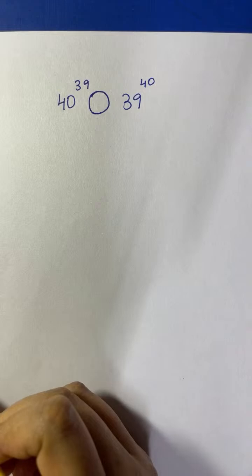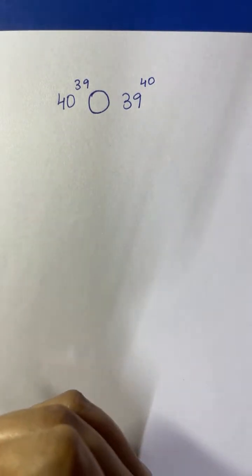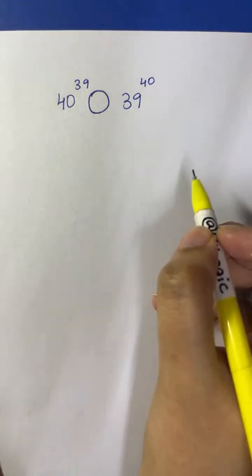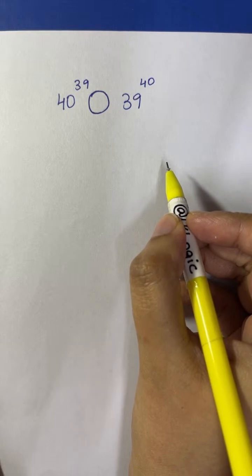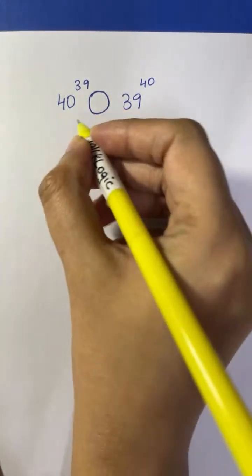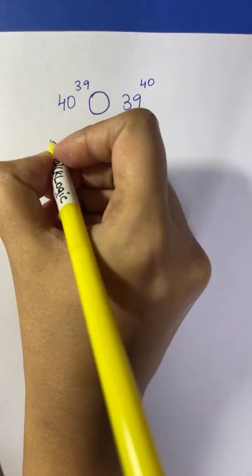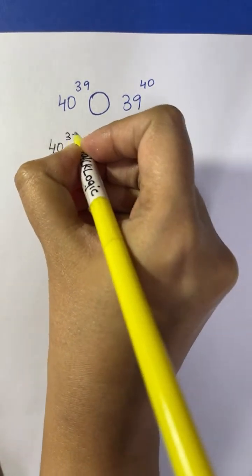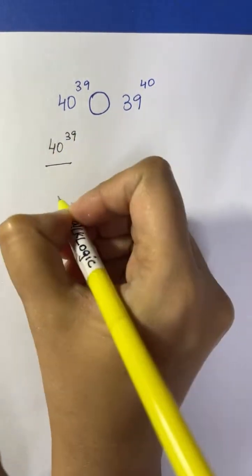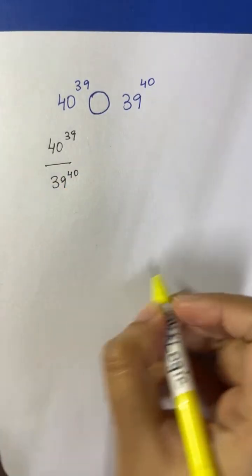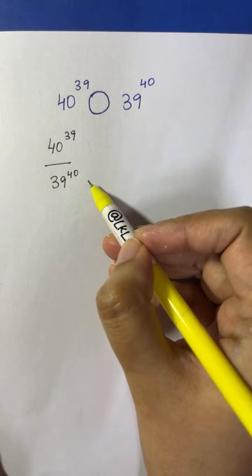So what should we do? How should we compare these two numbers? What we are going to do is write it down as a division of these two numbers, and then we can compare it to 1. So let's write it down: that is 40 to the power of 39 over 39 to the power of 40. Now this can be compared to 1.